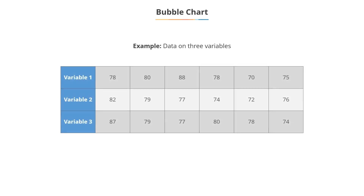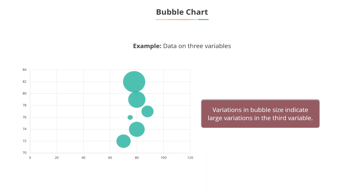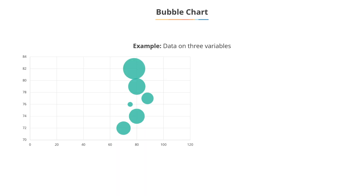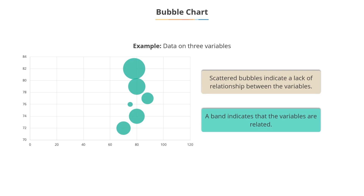Consider the following data on three variables. You get this bubble chart for the given data. Variations in the size of the bubble indicate large variations in the third variable. The first variable varies over a relatively broader range; as a result, the y-axis is spread over a wider range. The second variable is less spread, and hence the x-axis spread is also less. When the bubbles are scattered across the graph, it indicates a lack of relation between variables. If however there is a band, there is a relationship.